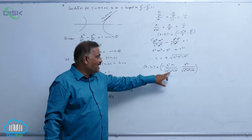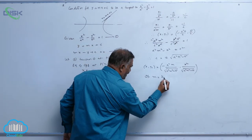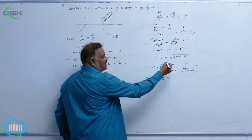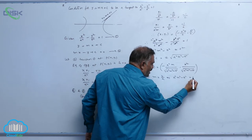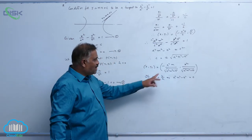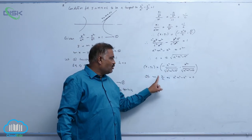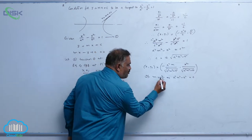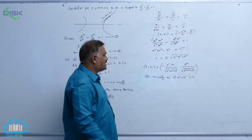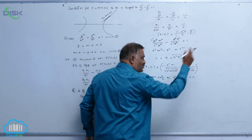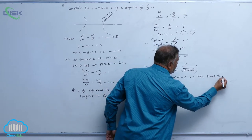Now, if m = b/a, then the denominator a²m² - b² becomes a²·(b²/a²) - b² = b² - b² = 0. A zero in the denominator means the point tends to infinity. So if m = ±b/a, this denominator becomes 0.